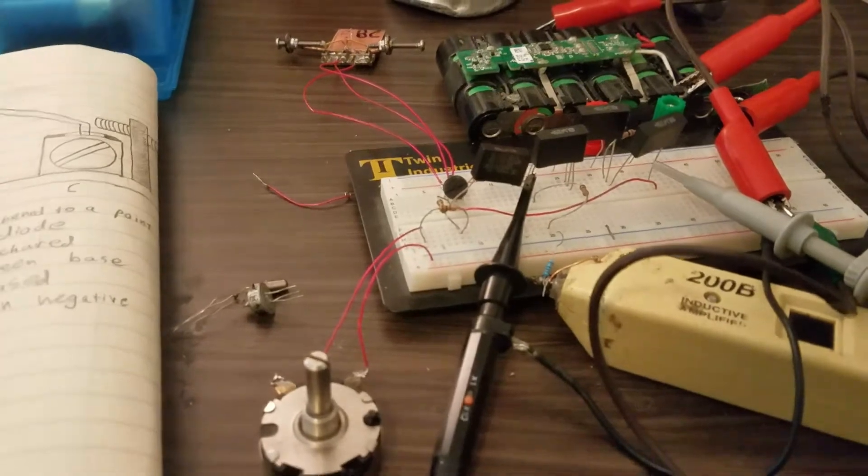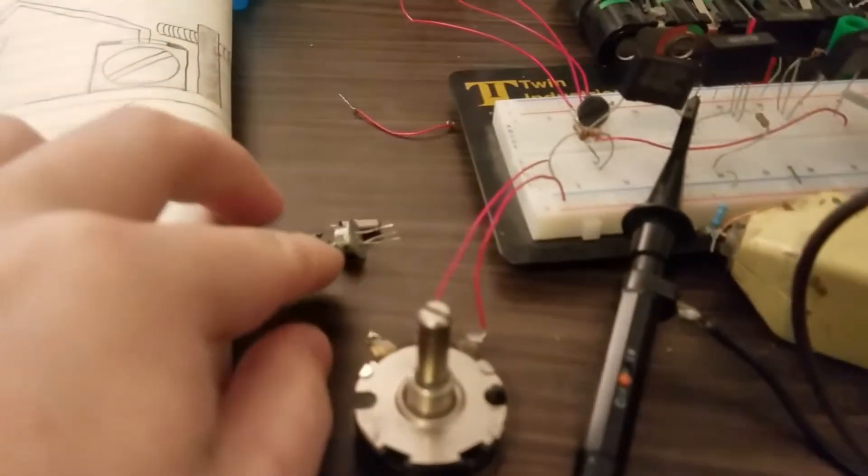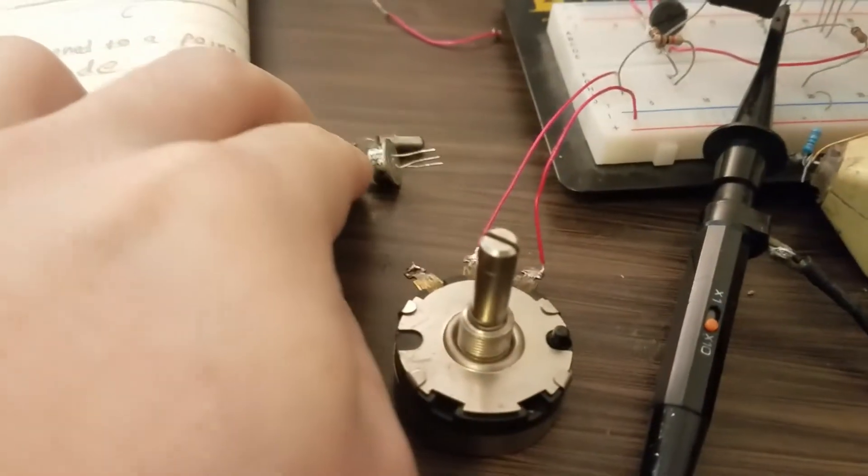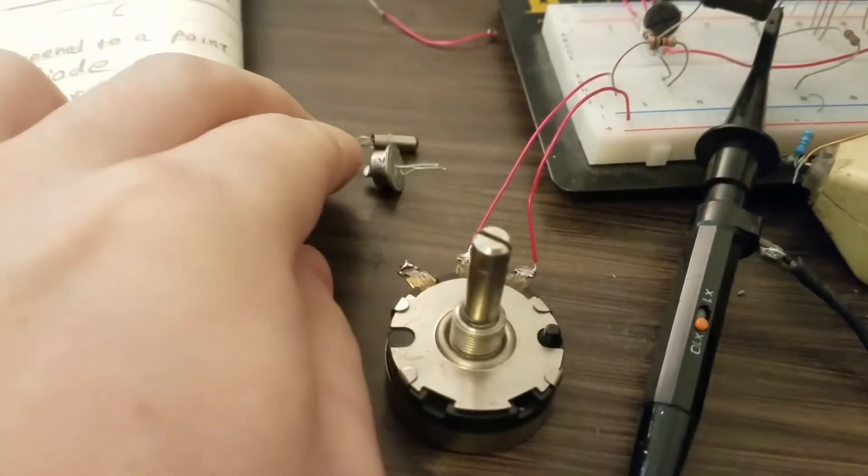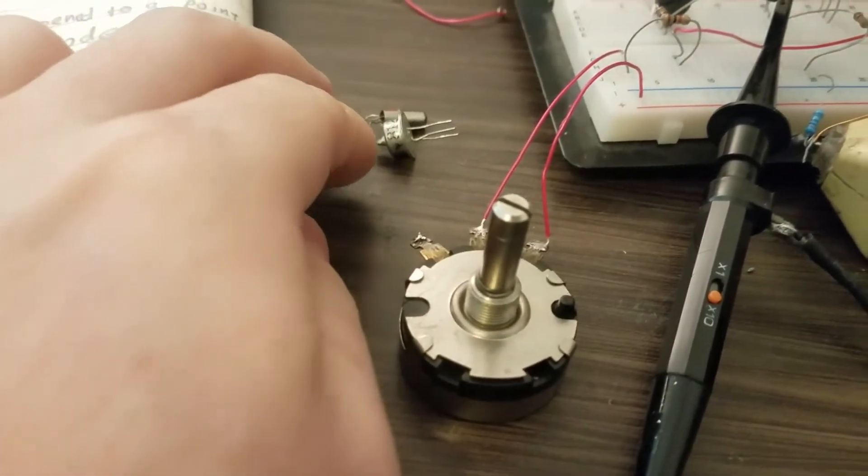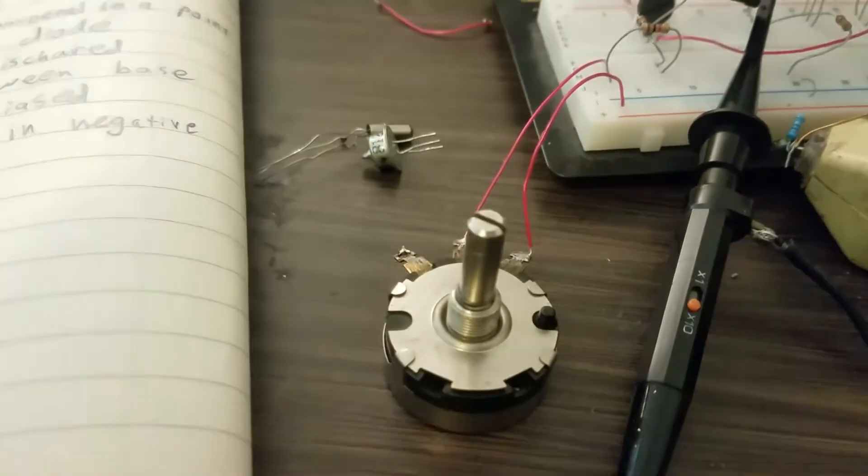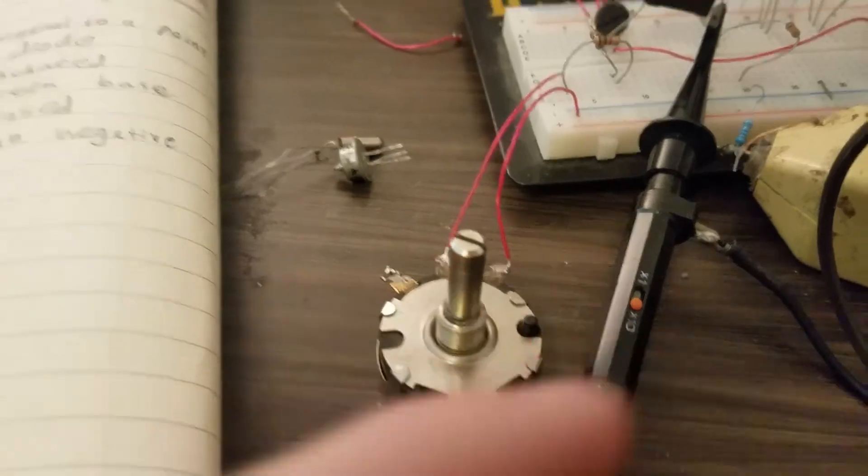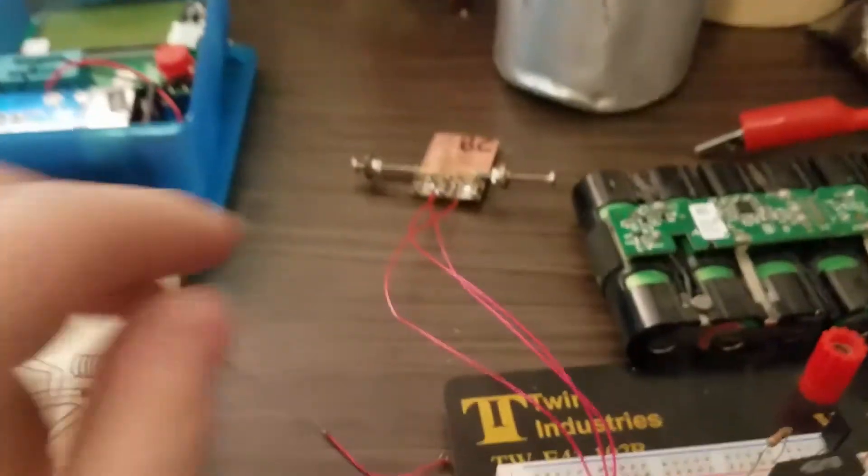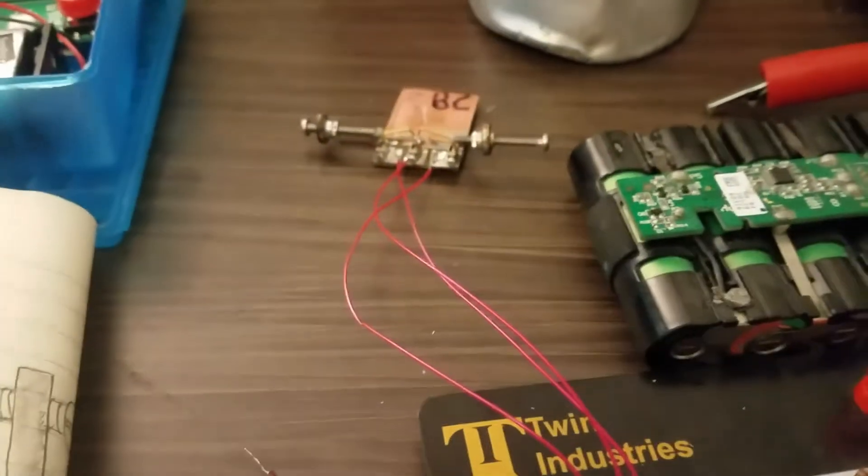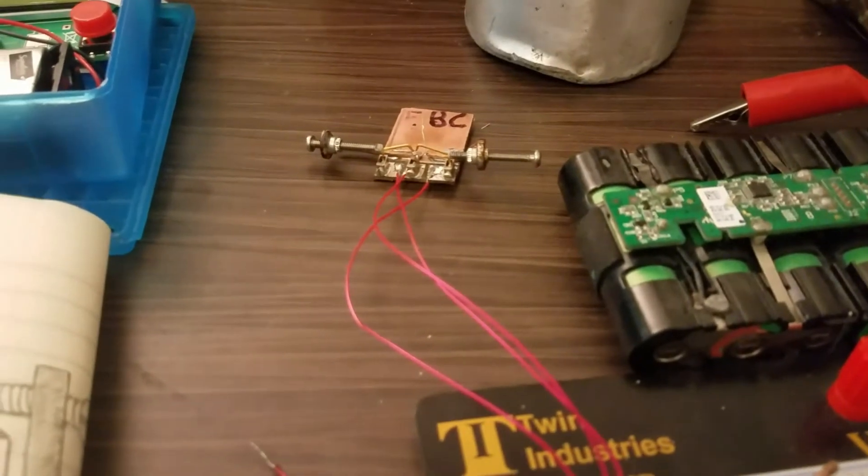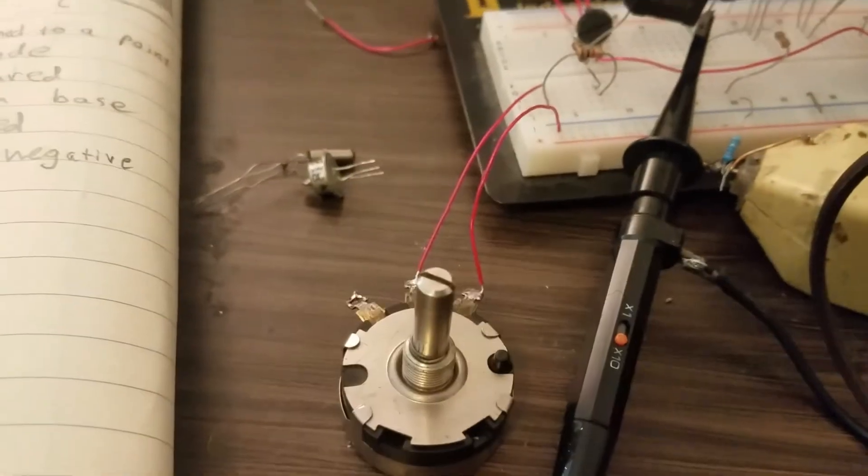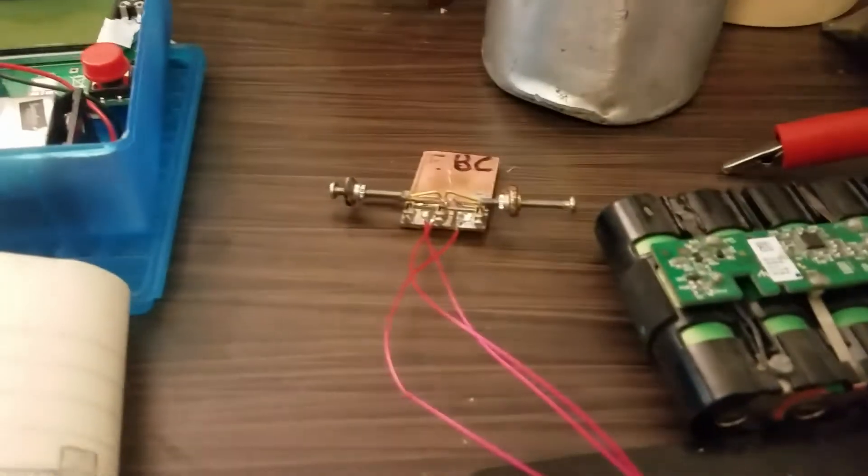So something to notice here, these two transistors right here, they oscillate at a frequency relatively similar to each other and that frequency shifts a relatively small amount when I adjust this potentiometer. With this one right here the frequency is a lot higher and varies greatly with that potentiometer so this really is not acting in the proper way.